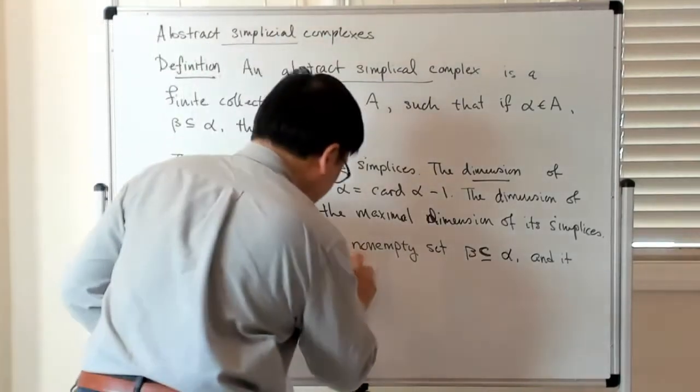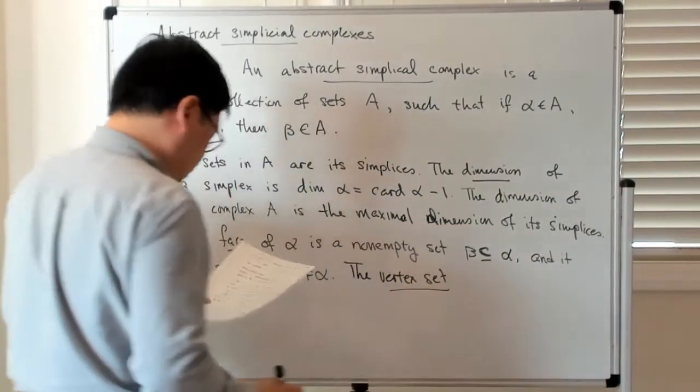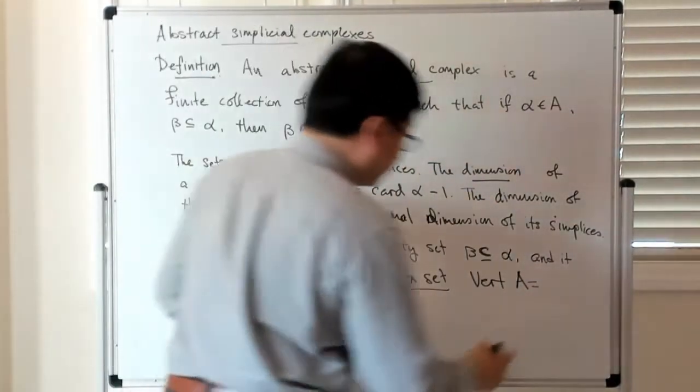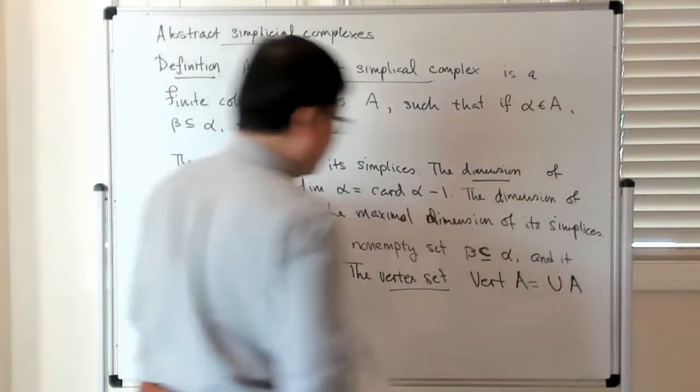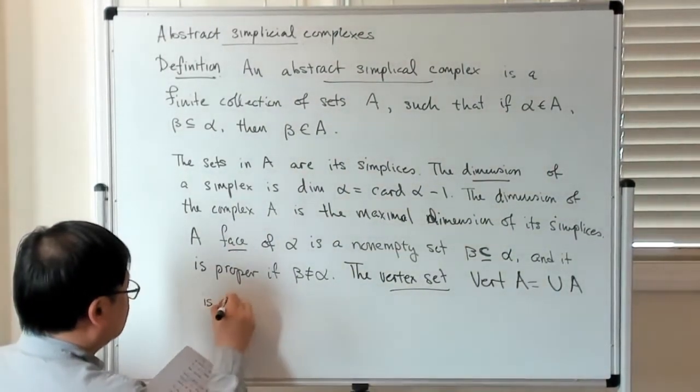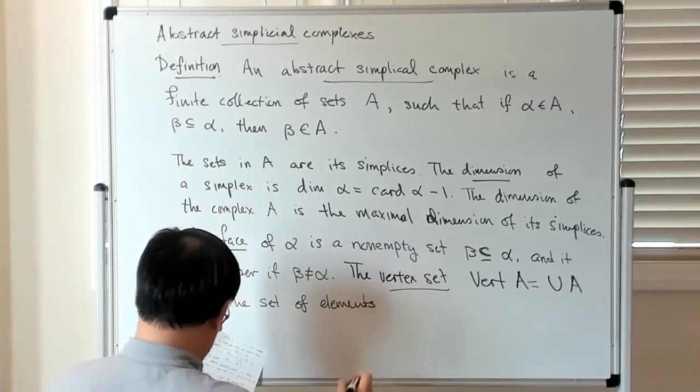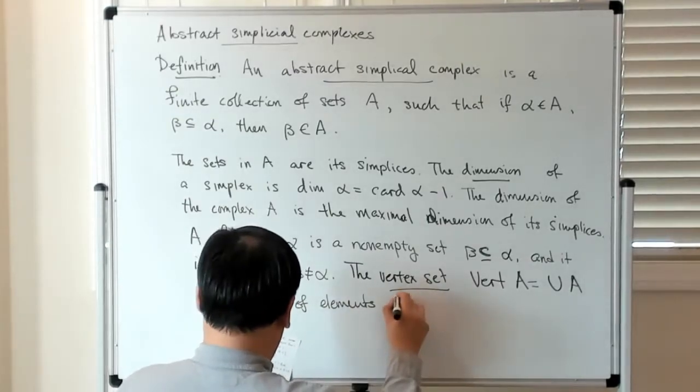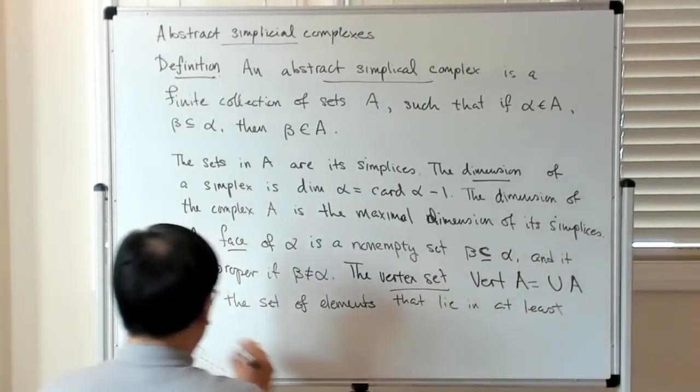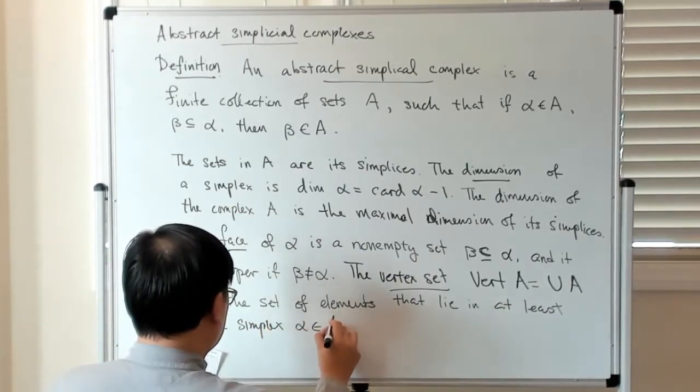The vertex set, which I denote by vert A, is just the union of all the elements in A. So it's the set of elements that lie in at least one simplex.